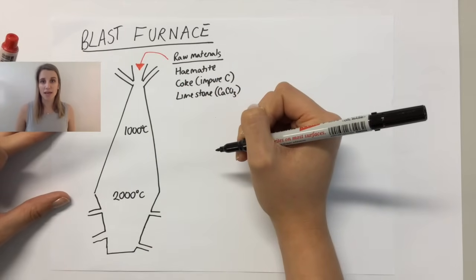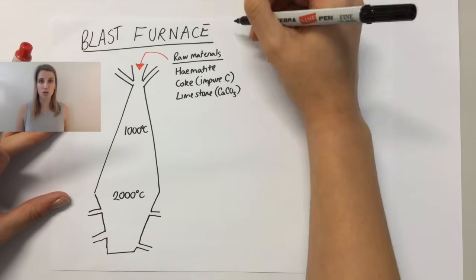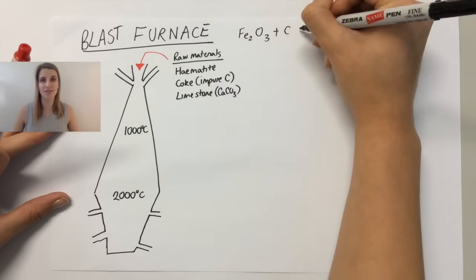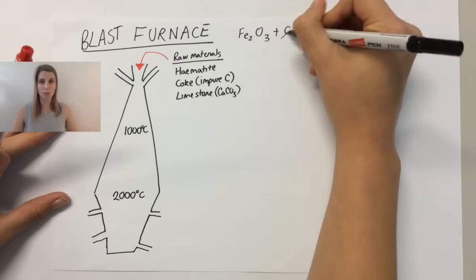Now what you might be thinking is that the iron ore, which contains iron oxide, which is Fe2O3, can react with the carbon because carbon is more reactive than it on the reactivity series. That should make iron and carbon dioxide.